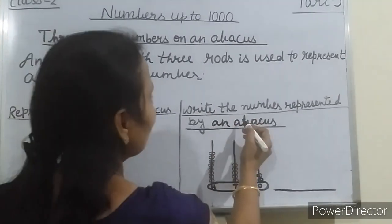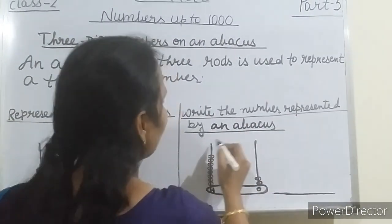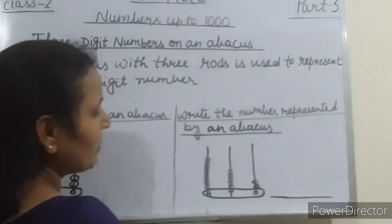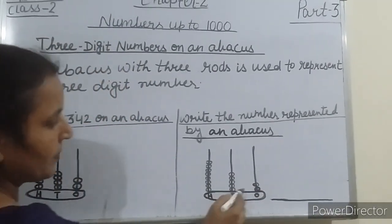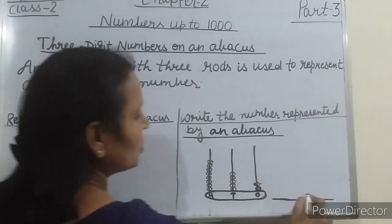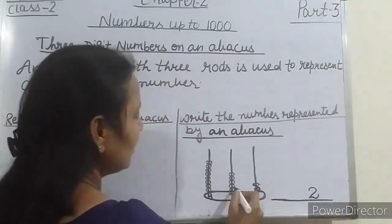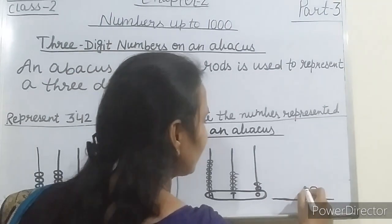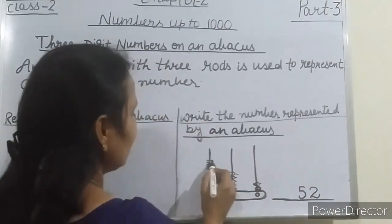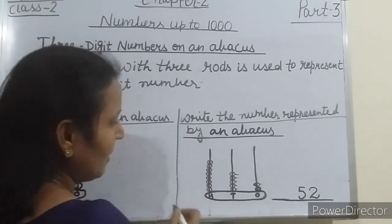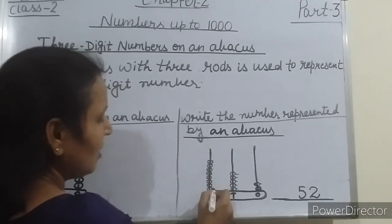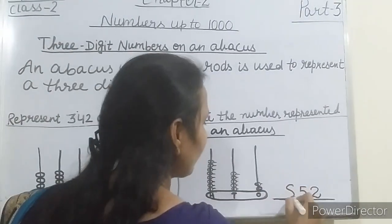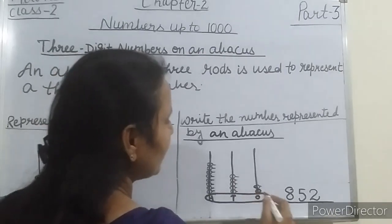And now the second one: write the number represented by an abacus. Start counting from the ones place — how many beads are there? At the ones place: one, two — so we write 2. At the tens place: one, two, three, four, five — so we write 5 at the tens place. And count the hundreds — at the hundreds place: one, two, three, four, five, six, seven, eight. So eight hundred fifty-two.